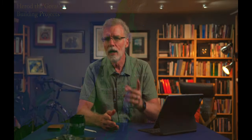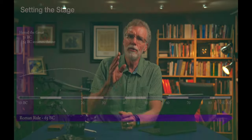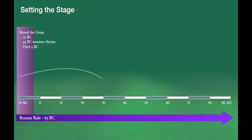It's into this context that Jesus is born, somewhere between 6 to 4 BC. Why not the year zero? Because Matthew specifically tells us that Joseph and Mary and Jesus had to flee to Egypt and remain there until Herod the Great had died, and we know this takes place in 4 BC.